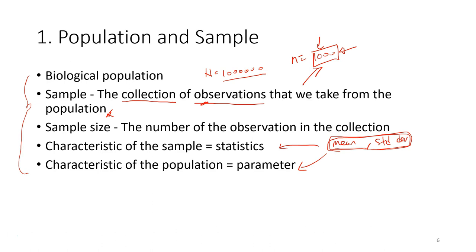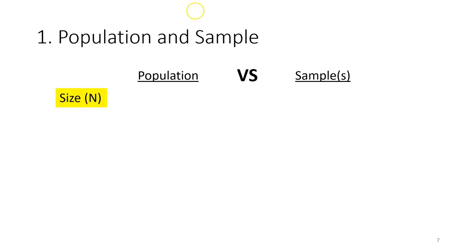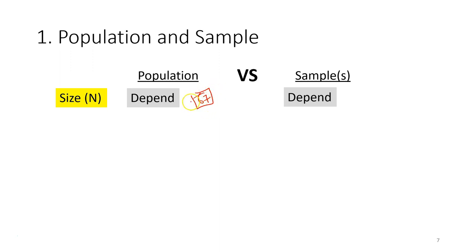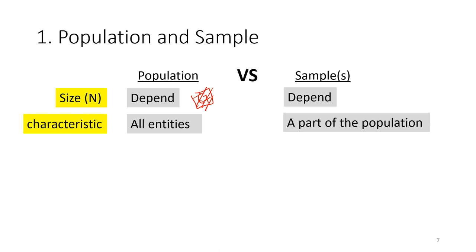Now let's look in detail at the differences between population and sample. In terms of size — the number of observations — the population can be very large or very small. For example, if investigating body height of conservation biology students in HS03 with about 67 students, the population size is quite small. In any case, the sample is a subset of the population and is usually smaller, though the size depends on the population.